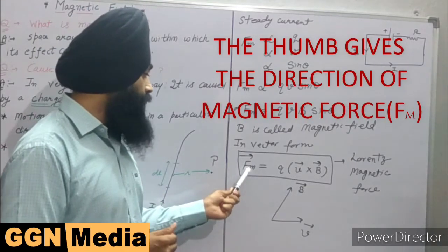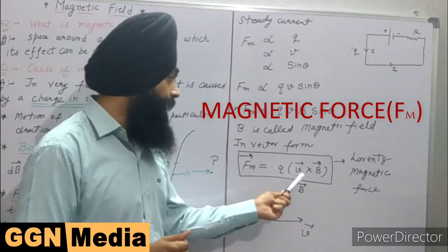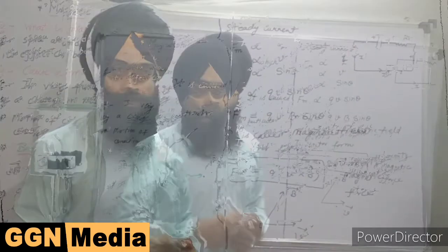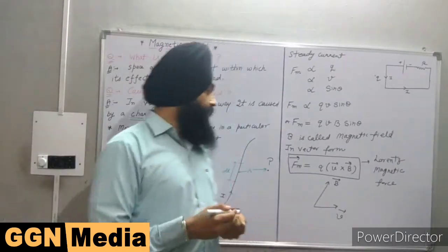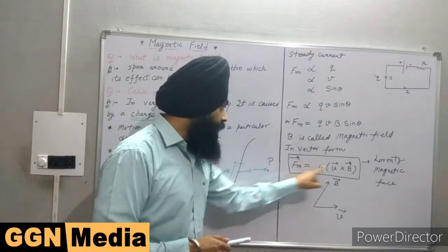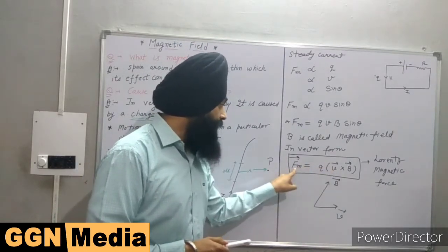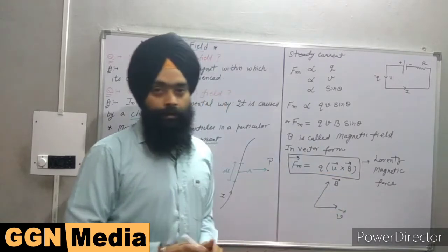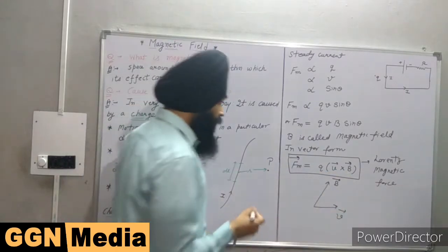Simply, the direction of F is always perpendicular to the plane containing both the vectors v and B. Or in simple words, we can say that Fm is perpendicular to velocity vector v as well as perpendicular to direction of B.